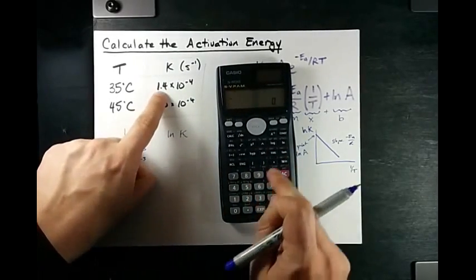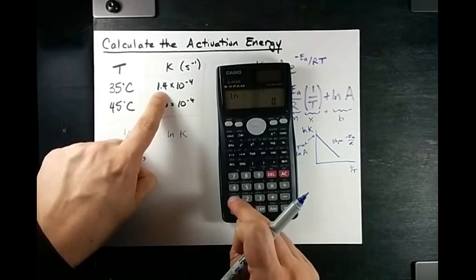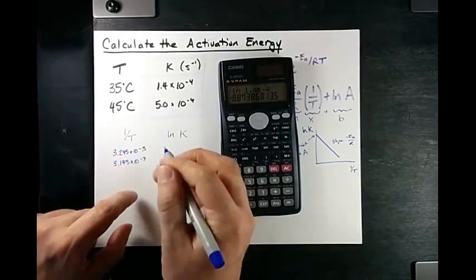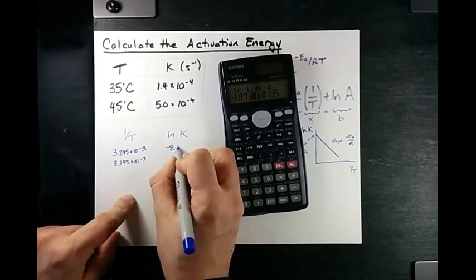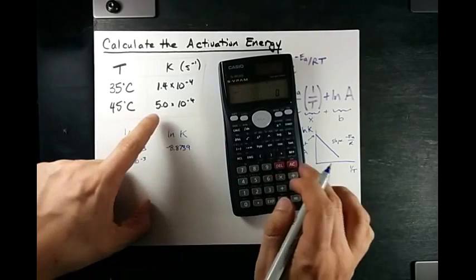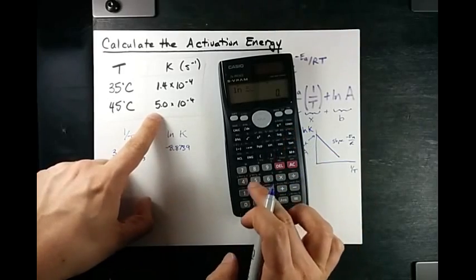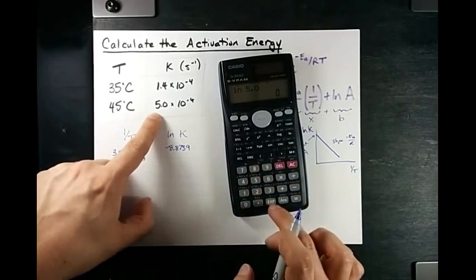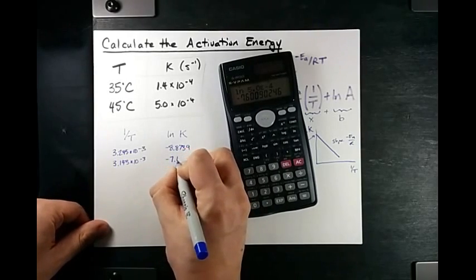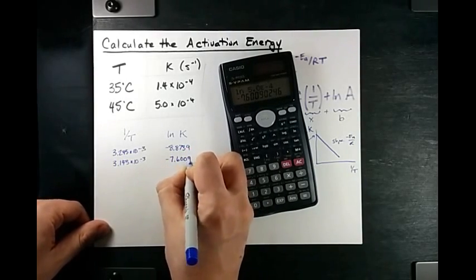Taking the natural logarithm of 1.4 times 10 to the negative 4 gives me negative 8.8739. And taking the natural logarithm of 5 times 10 to the negative 4 gives me negative 7.6009.